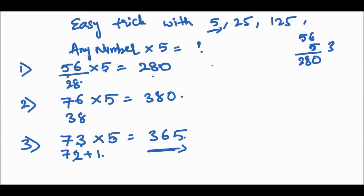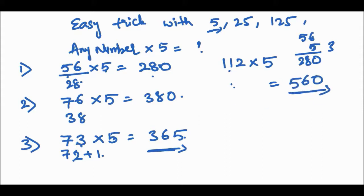Another example with a three-digit number: 112 into 5. Half of 112 is 56, so the answer is 560. Now an odd three-digit number: 137 into 5.